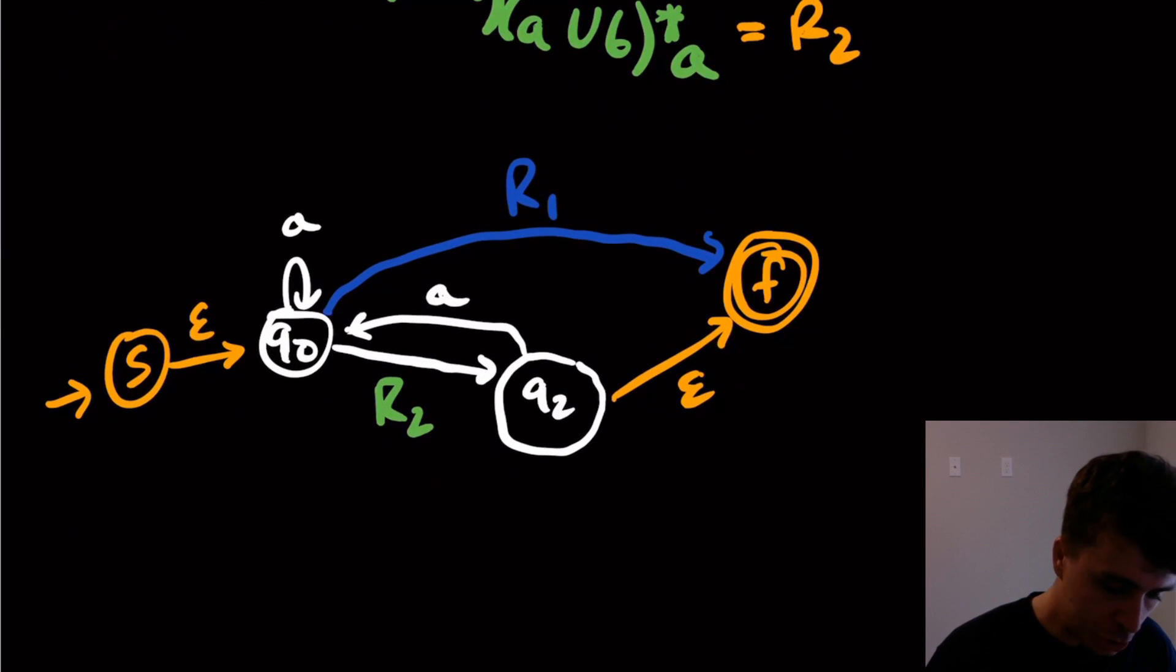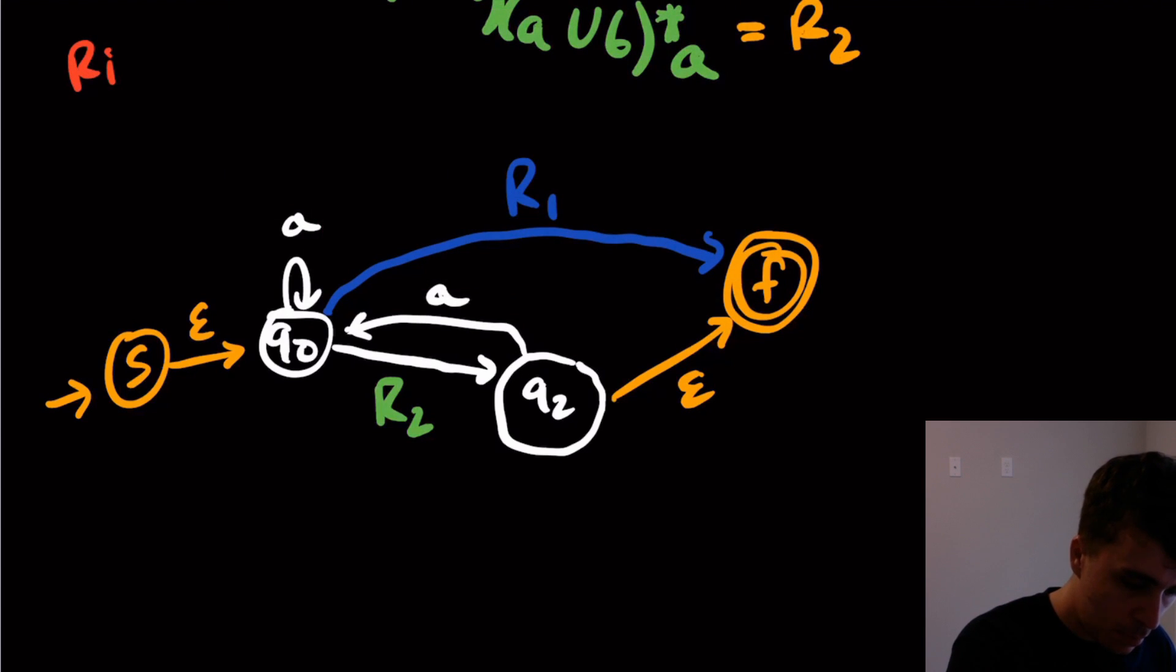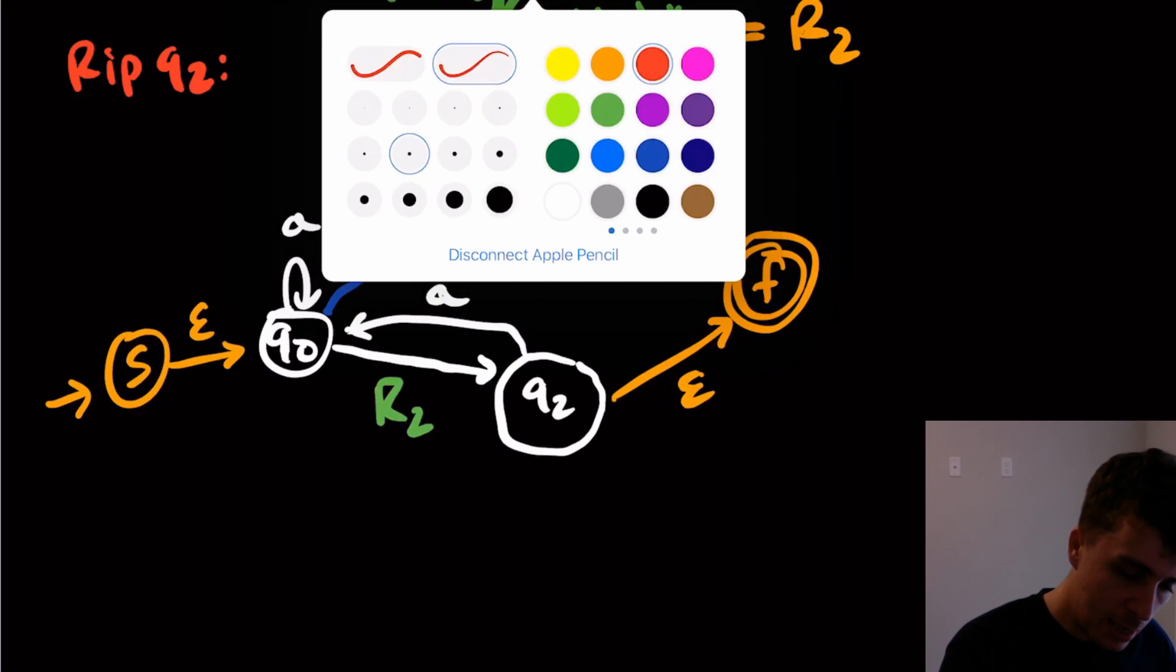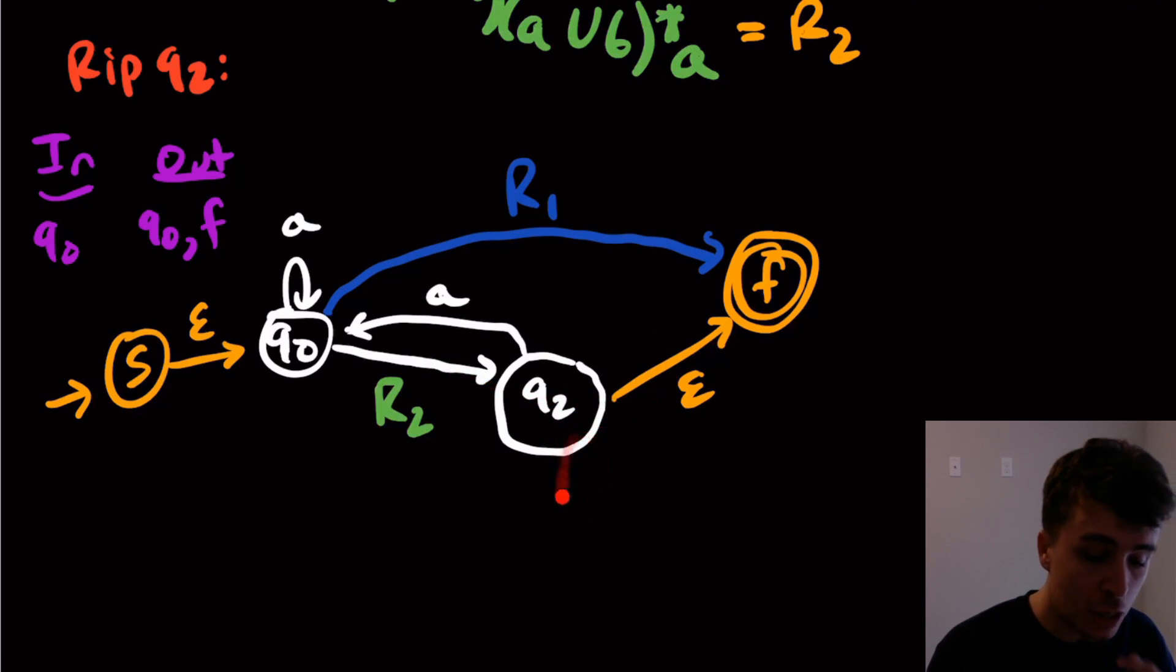So now let's just pick whatever state we want to rip. Here we have, I think Q2 is easier. So let's rip Q2. So make our in and out list. So the in list is going to be Q0, and the out list is going to be Q0 and F, just following the transitions, and no self loop here, which is good.